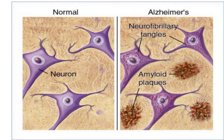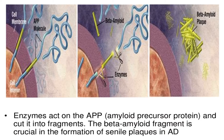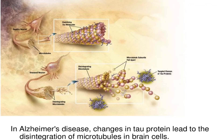On the left side you can see normal neurons, while on the right side you can see amyloid plaques and neurofibrillary tangles inside. The enzymes act on the amyloid precursor protein and cut it into fragments. The beta-amyloid fragment is crucial in the formation of senile plaques in Alzheimer's disease. In Alzheimer's disease, changes in tau protein lead to the disintegration of microtubules in brain cells.